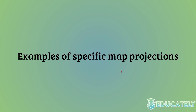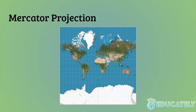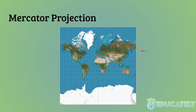Now let's look at specific map projections. The most common one — if you know any projection, you probably know this one — is the Mercator projection. This has been around for probably 450 to 500 years. It was used very frequently for navigation in that era and even in recent years.